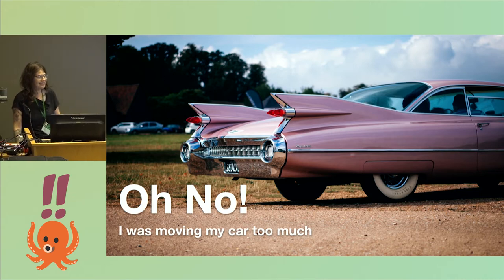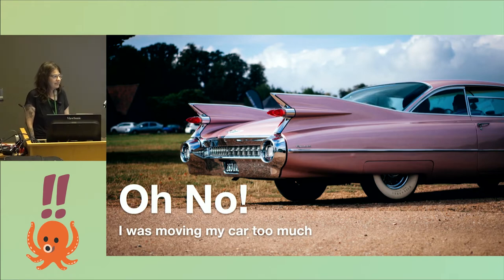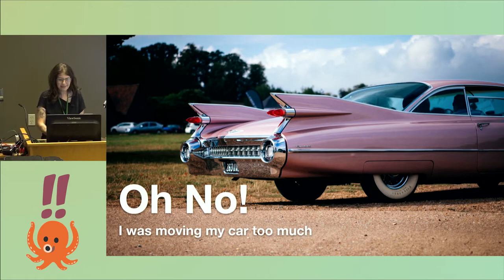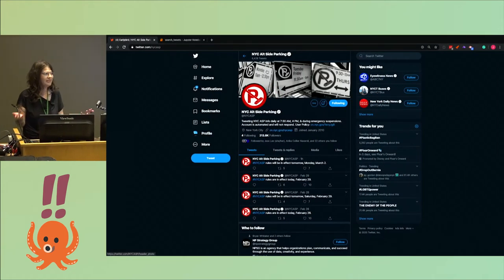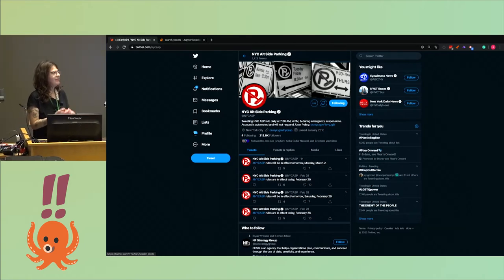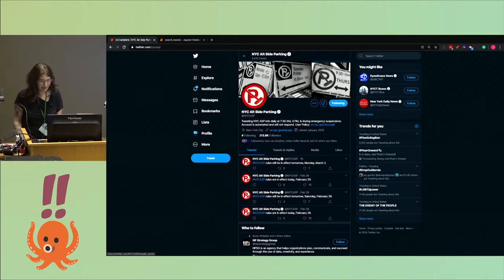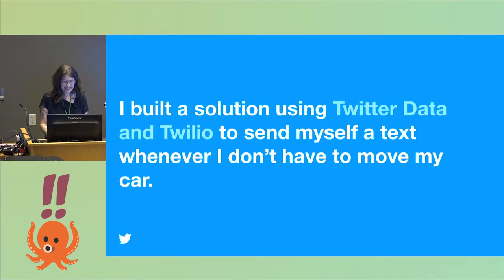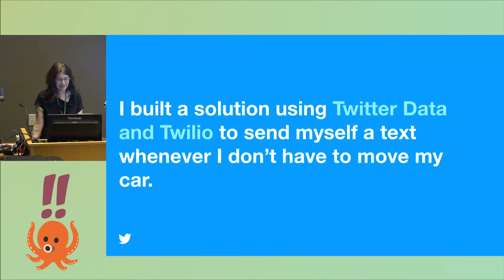My roommate asked if I had gone to a show or a party — something cool. And I said nope, I was just moving my car. They said I didn't have to do that, and showed me this really cool Twitter handle called NYC Alternate Side of the Street Parking. It updates every day at 7:30 a.m. and 4 p.m. And I thought — I'm a developer advocate at Twitter, I think I can solve this problem.